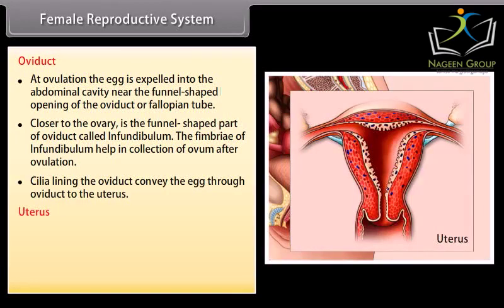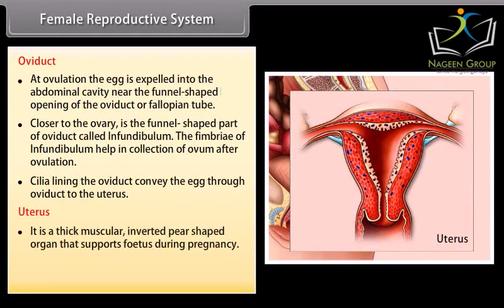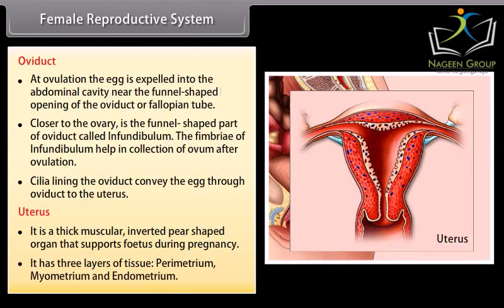The uterus is a thick muscular, inverted pear-shaped organ that supports the fetus during pregnancy. It has three layers of tissue: perimetrium, myometrium, and endometrium.